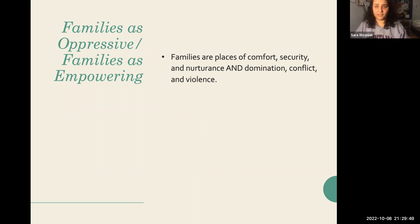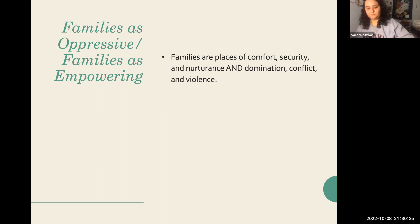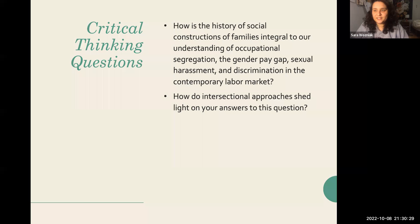Families are places of comfort, security, nurturance, and domination, but also places of conflict and violence. Even though we're supposed to feel taken care of within our families, the family can be a very violent and sometimes abusive place — I've even heard it described as one of the most violent institutions aside from the military during wartime. To conclude: how is the history of the social construction of families integral to our understanding of occupational segregation, the gender pay gap, sexual harassment, and discrimination in the contemporary labor market? And how do intersectional approaches shed light on your answers?